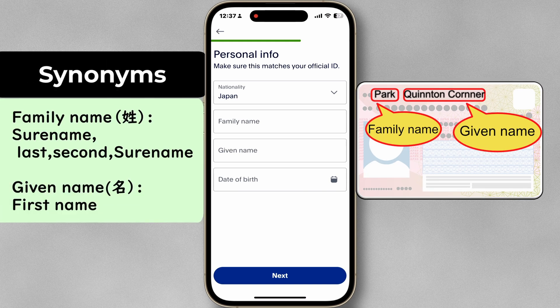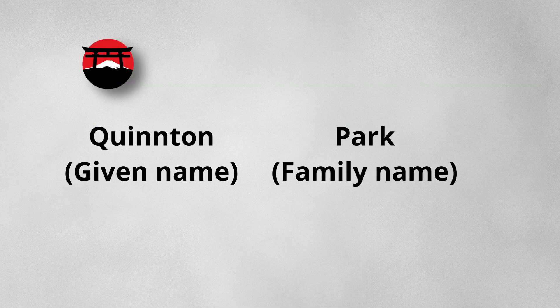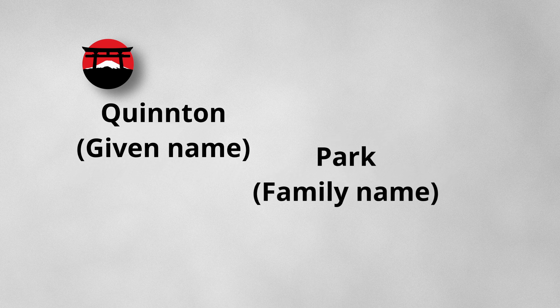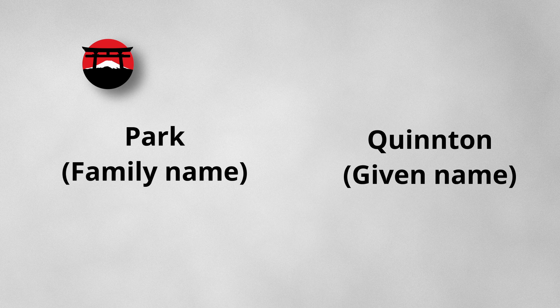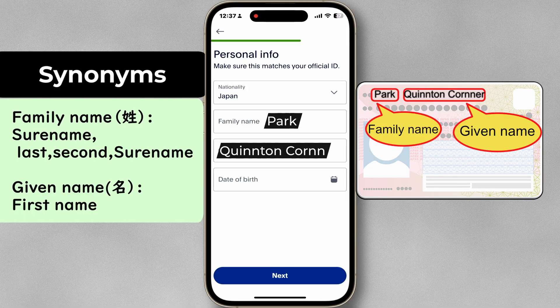In Japan, the family name comes before the first name. A person with the first name of Quinton and the family name of Park is called Park Quinton rather than Quinton Park. Also, if you have a middle name, the middle name should come last in the given names.